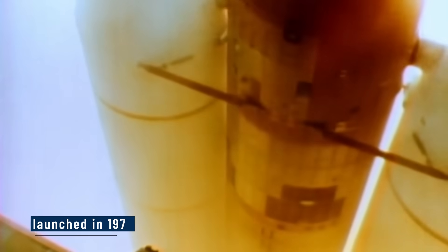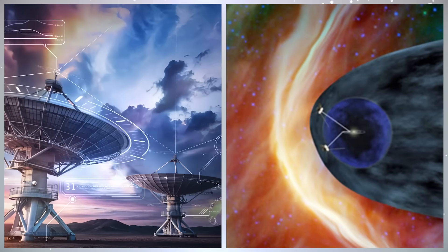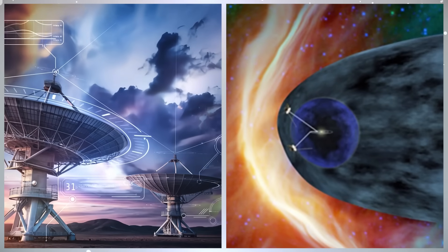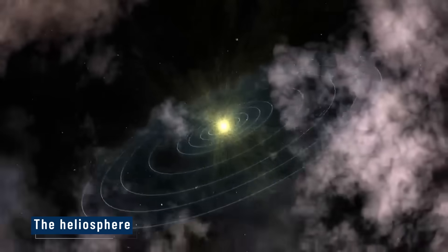launched in 1977 and the first to enter interstellar space in 2012, has sent back data revealing a sudden rupture in the sun's protective magnetic bubble, the heliosphere.